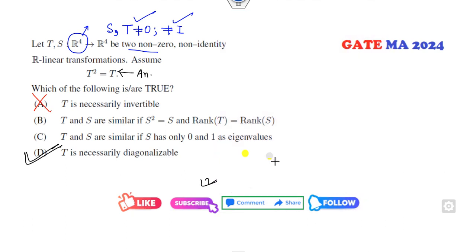Now look at the other two options. T and S are similar. When can you say that two matrices are similar? When the Jordan block of T and the Jordan block of S are the same corresponding to each eigenvalue, for each eigenvalue.